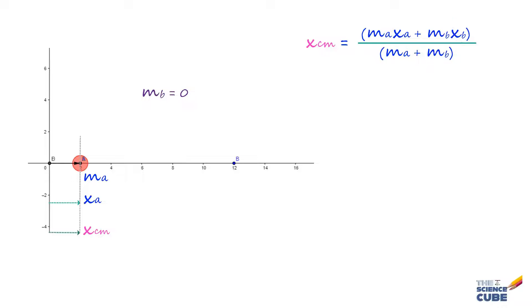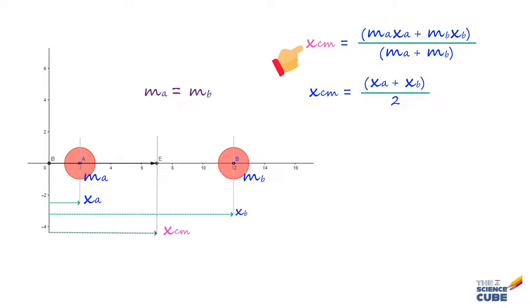Now let us say that we make mass a equal to mass b. Then just looking at the symmetry, we can say that the center of mass should be at the middle of the two particles. And when we make mass a is equal to mass b in this equation, what we find is center of mass becomes xa plus xb upon two, which is indeed midway between the two points.